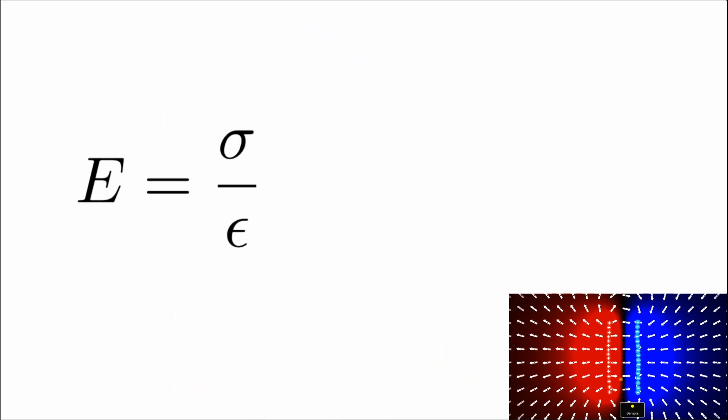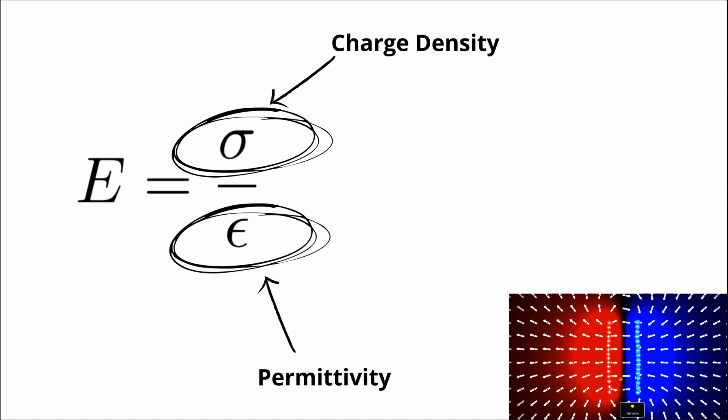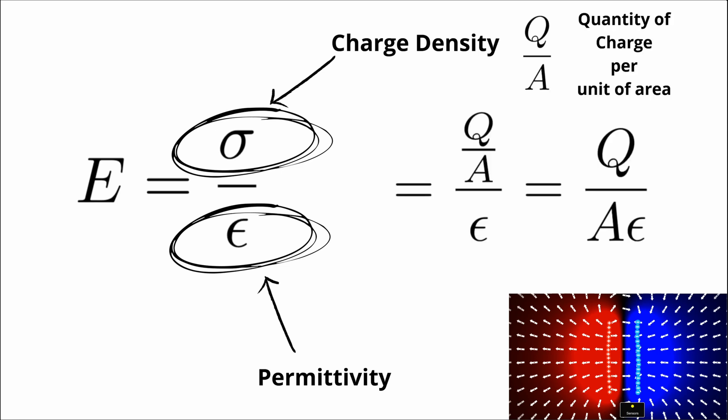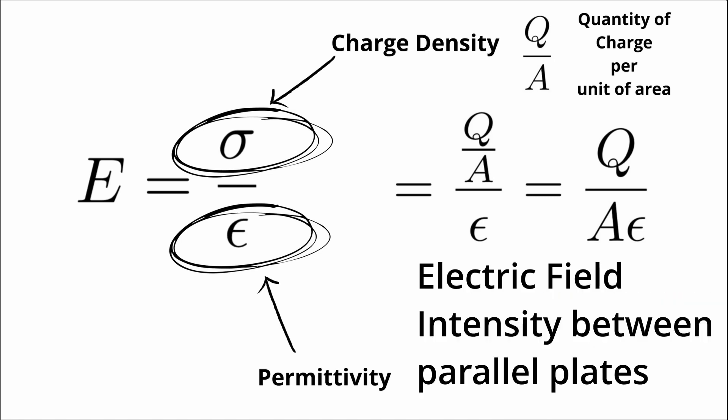So it takes some calculus to get here, and that's beyond the scope of this video to prove it. But the electric field intensity between parallel plates is equal to sigma over epsilon, where sigma is the charge density and epsilon is the permittivity of the material between the plates. The charge density is the number of charges or how many coulombs there are per unit of area. And so if we substitute Q over A into this expression, we get Q over A times epsilon for the electric field intensity.